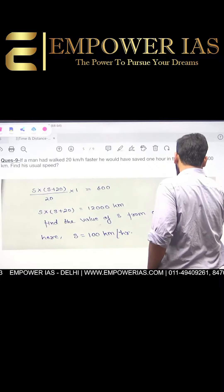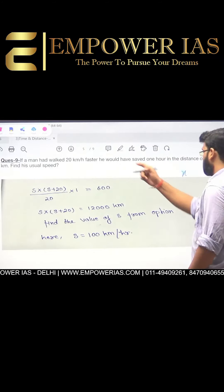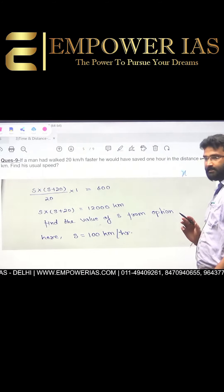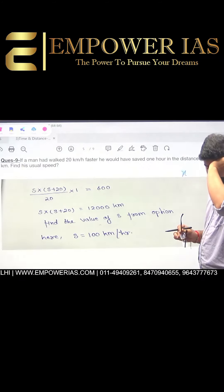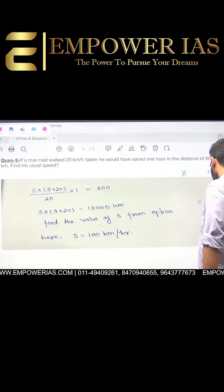Let his original speed be x, so his new speed will be x plus 20. What is the distance he is going to travel? We will take the LCM of both. It means the distance will be x into x plus 20.